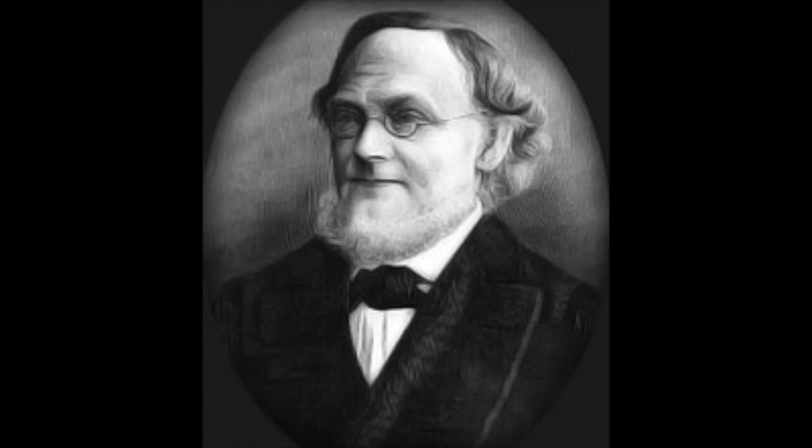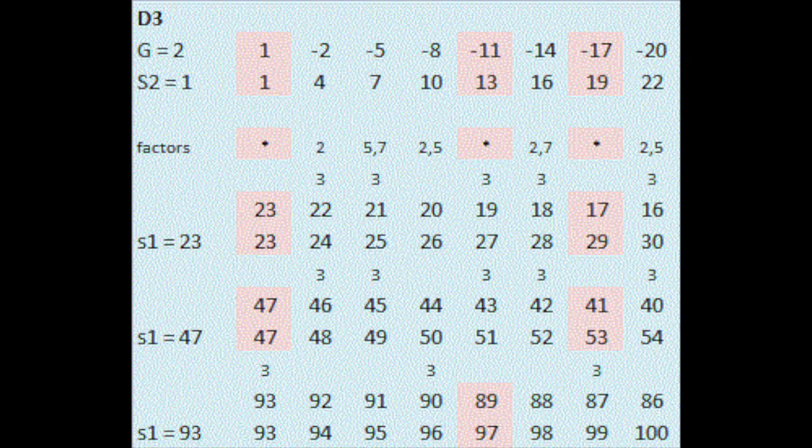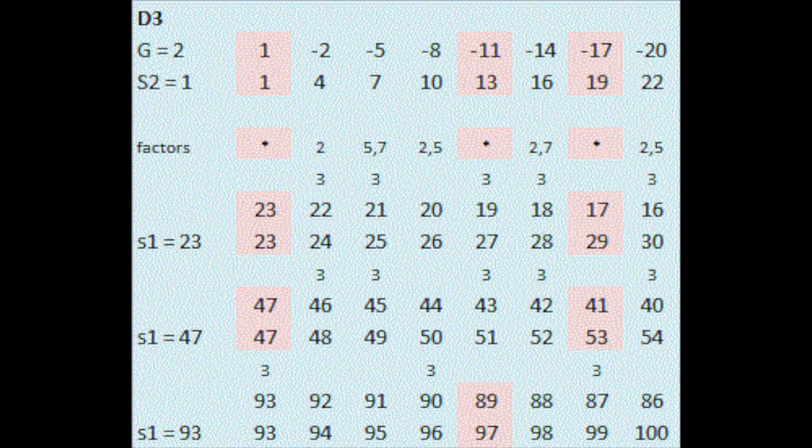Later on in his letter, he proposed a second conjecture: every integer greater than two can be written as the sum of three primes. With Goldbach's conjecture, numbers can be written and organized in a certain way.